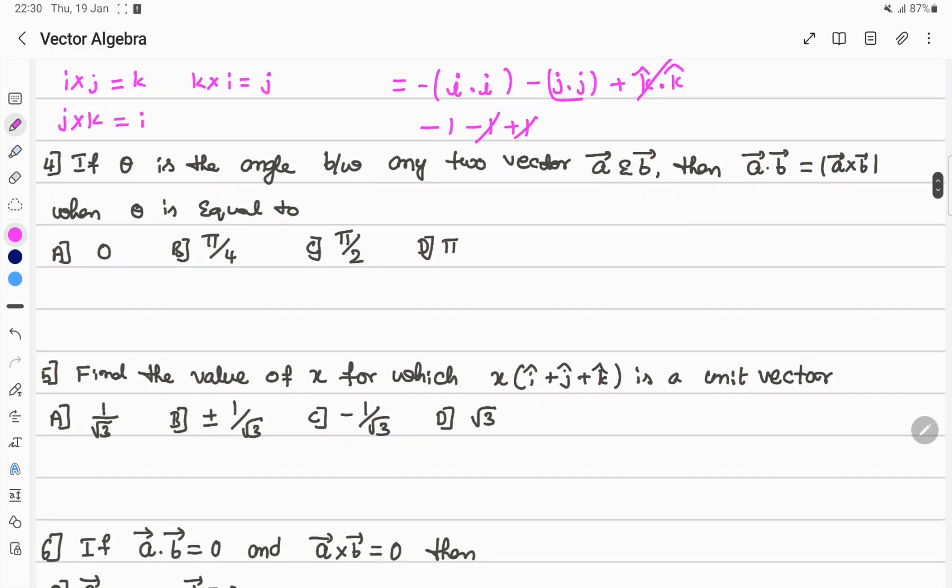Next question: if theta is the angle between two vectors A and B, A dot B equals A cross B magnitude, then what is angle theta? From definition, A dot B equals magnitude of A times magnitude of B times cos theta.